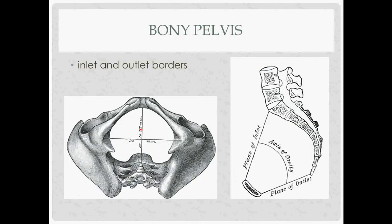It's good to know the bony pelvis in terms of the plane of the inlet and the outlet. The inlet is defined by the sacral promontory — at the very top of the sacrum — where it meets up with the top of the pubic symphysis. The plane of the outlet is the coccyx with the bottom of the pubic symphysis, showing the ischial tuberosities making the transverse diameter, and the AP diameter between the pubic symphysis and the coccyx.